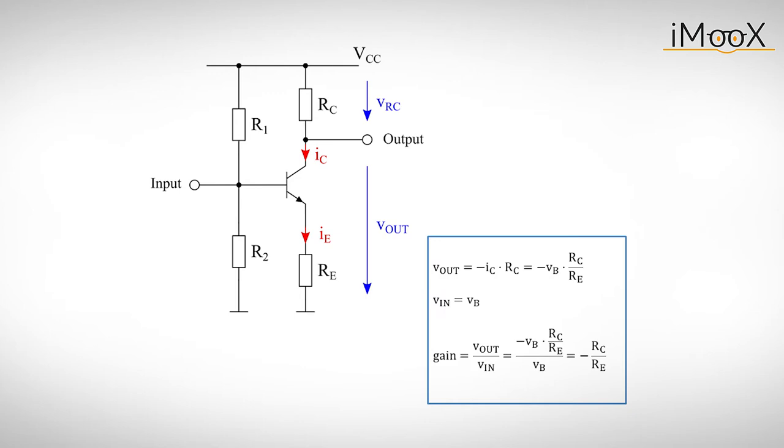We can also define the gain of the circuit very easily. By dividing the output voltage by the input voltage, we get the gain of minus RC divided by RE. Neat, isn't it?